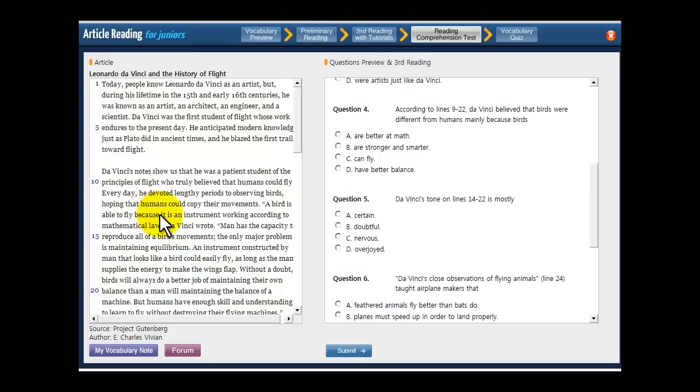A bird is able to fly because it is an instrument working according to mathematical law. Man has the capacity to reproduce all of a bird's movements. The only major problem is maintaining equilibrium. An instrument constructed by man that looks like a bird could easily fly as long as the man supplies the energy to make the wings flap. And he keeps talking. But when he's saying this, he doesn't sound super happy. He doesn't sound sad. So there are other types of tones that we would be looking for. And here he sounds like he kind of knows what he's talking about. He's just matter-of-factly telling us these things and saying that they're true. So you're looking for something that says he knows that something's true and he's just saying what he knows is true.